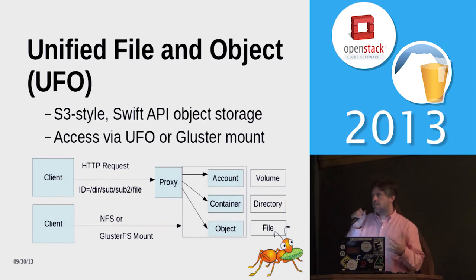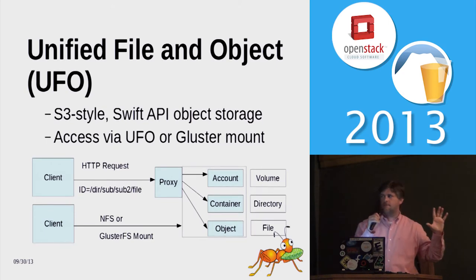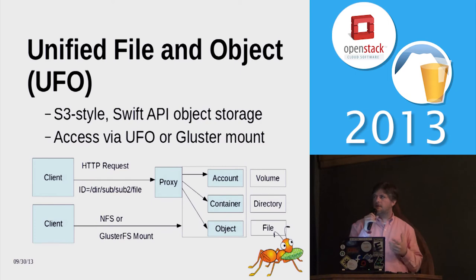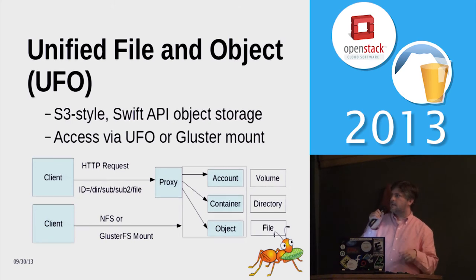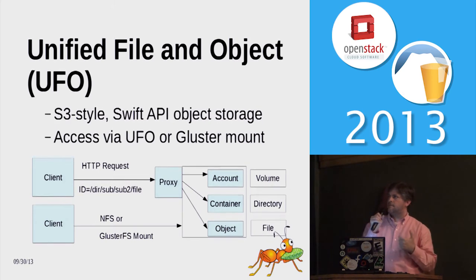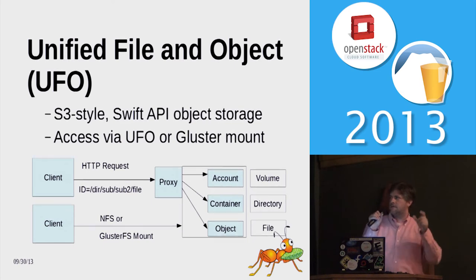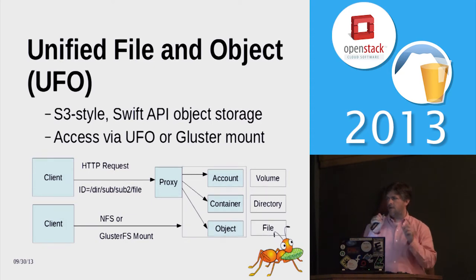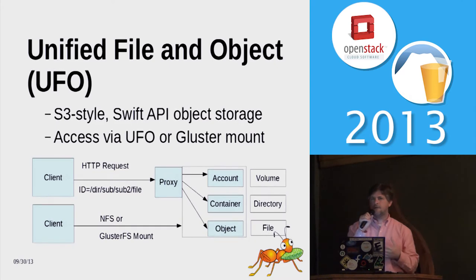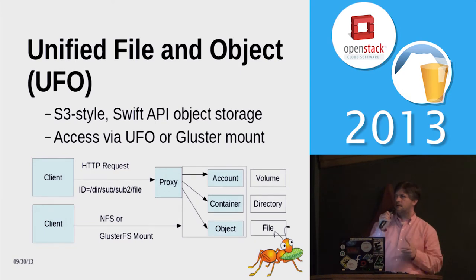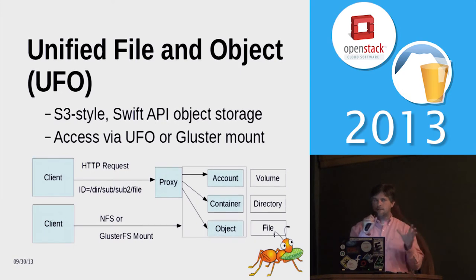With the 3.3 release, we also implemented something we called unified file and object. This gets back to the core concept of multi-protocol access and the ability to attach to the same data regardless of the protocol or access method. As a basic example: object storage over an HTTP request, and that same data can be accessed via NFS. We map the Swift account, container, and object to, on the Gluster side, volume, directory, and file. That account-to-volume mapping works well for a single-tenant architecture, but when you go multi-tenant, it requires changing that mapping a bit — though conceptually it's still the same.